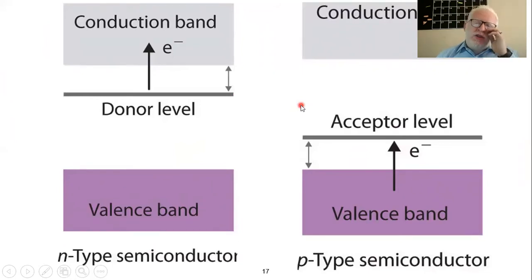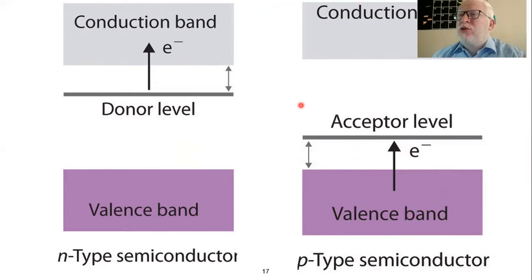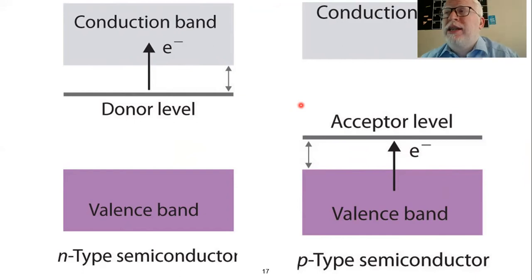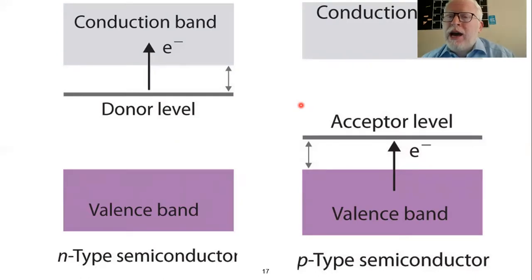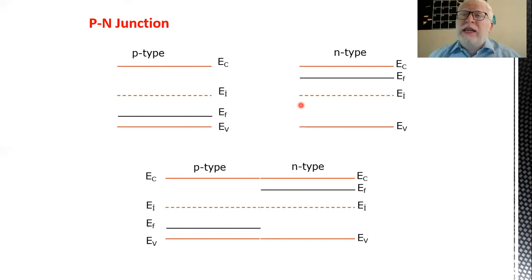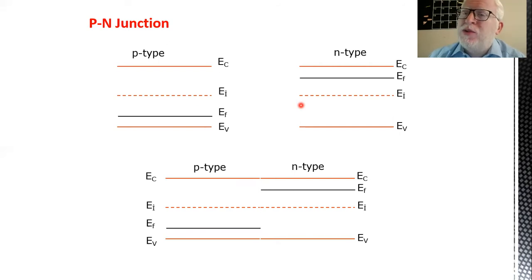This briefly summarizes the three cases: intrinsic (Fermi level centered, n equals p), N-type (Fermi level shifted up, more electrons and fewer holes), and P-type (Fermi level shifted down, more holes and fewer electrons). Our device today is the PN junction diode, combining P-type with N-type material, so it makes sense to first refresh what P-type and N-type mean.